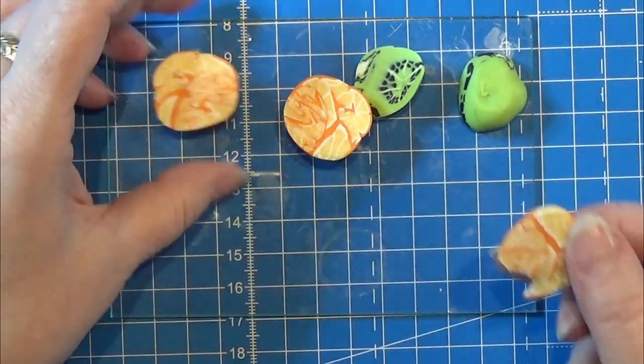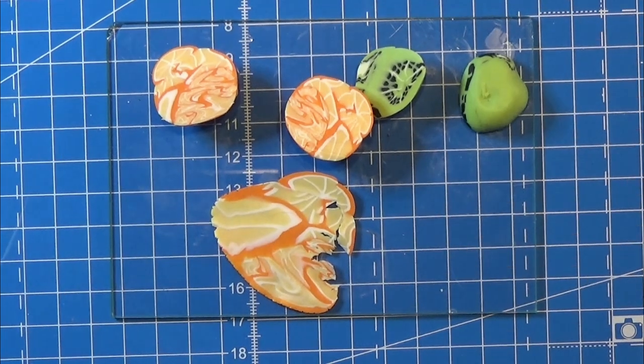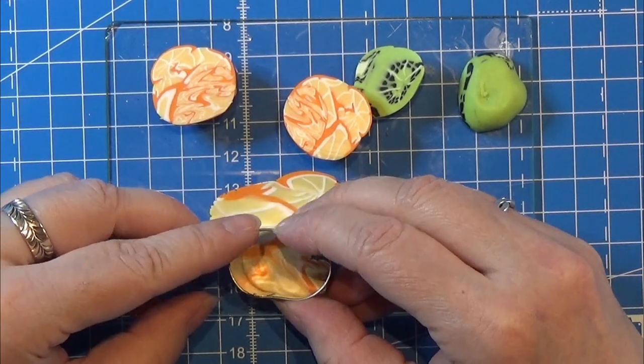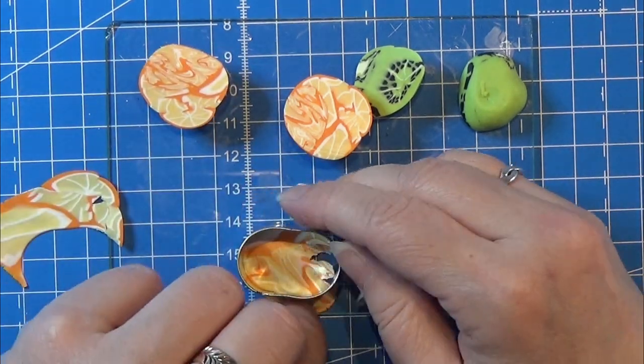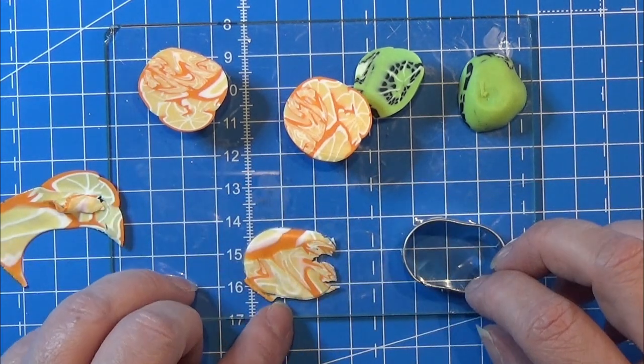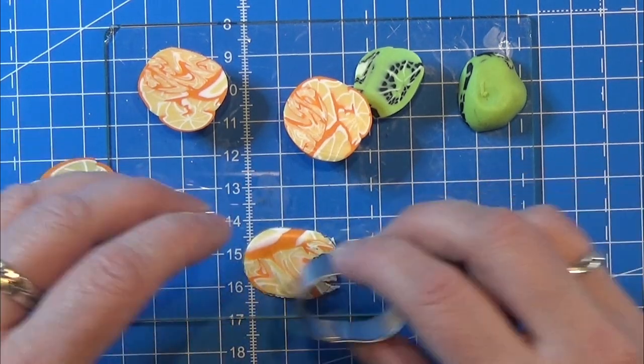I made some oranges and some kiwi the other day and I found that these leftovers here were pretty cool so I ran them through my pasta machine. And I'm going to make a lid of that as well just because I can.